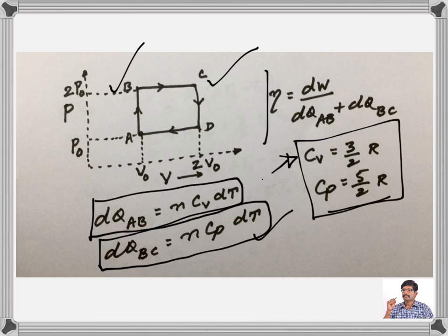We know that efficiency is equal to work done by the heat absorbed. Only heat is absorbed during AB and BC. Work done is nothing but area under the curve.